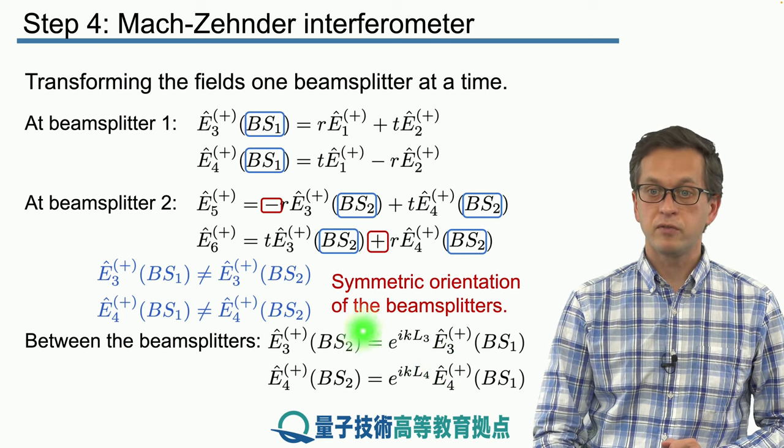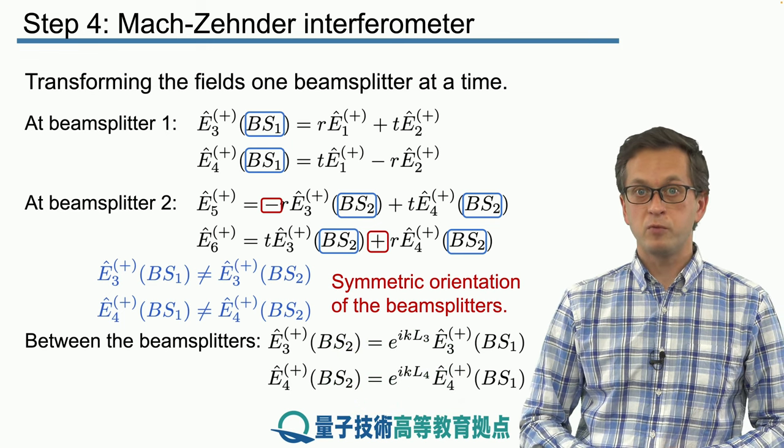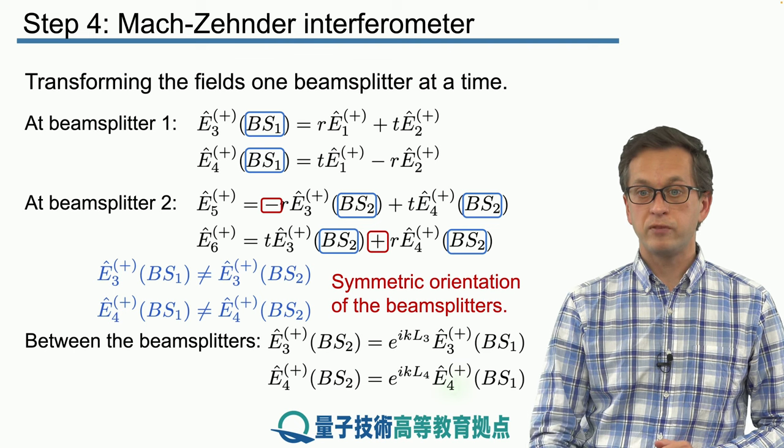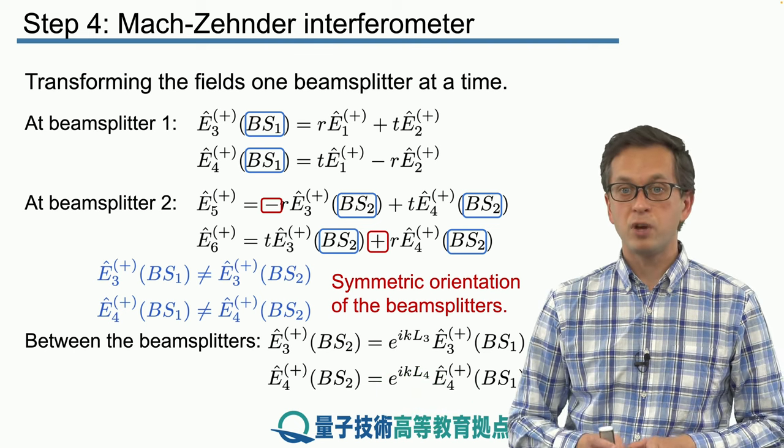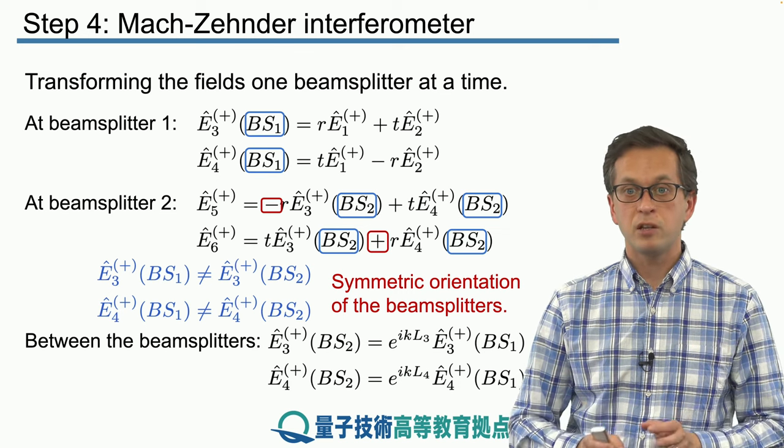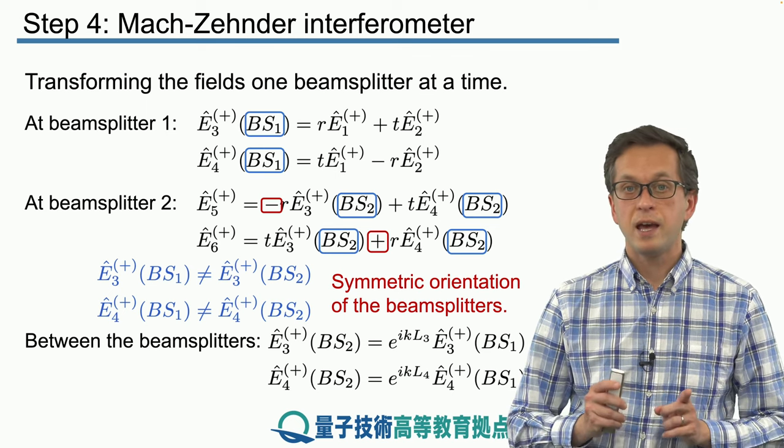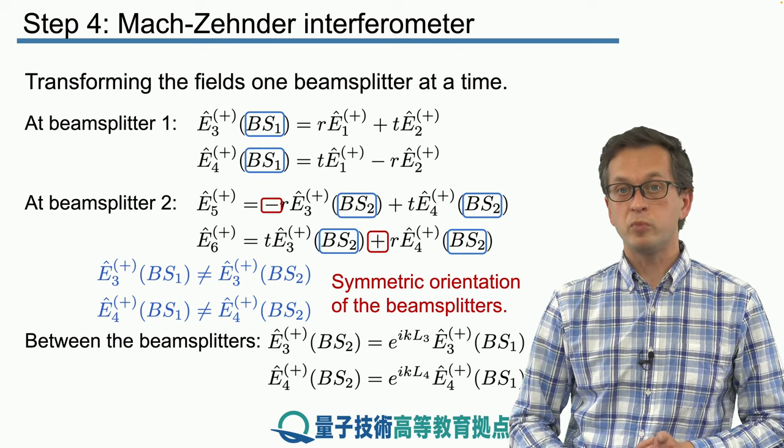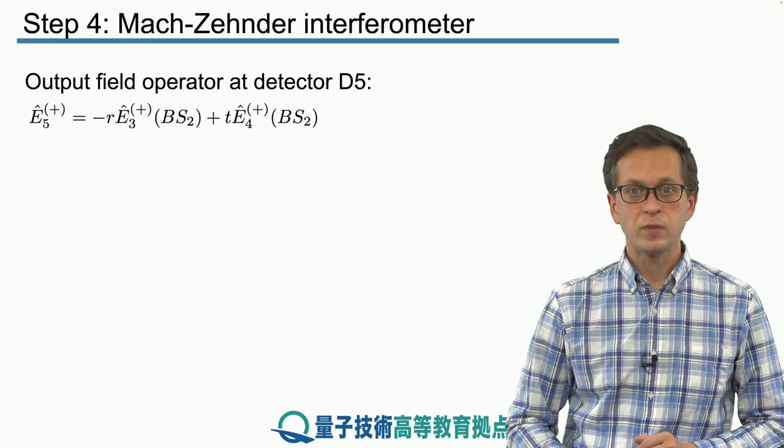And similarly for E4, when it travels from beam splitter 1 to beam splitter 2, it picks up the following exponential, e to the iKL4. So now we have all the ingredients that we need. We just have to make a bunch of substitutions in order to find out the output fields in terms of the input fields and the input state in order to compute W1 for detector 5 and detector 6. So let's do it.